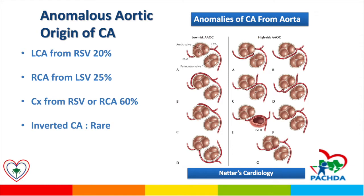Anomalous aortic origin of coronary arteries has been reported as one of the important classifications. We have two categories: low risk aortic anomalous and high risk aortic anomalous of the coronary artery. One example is the left coronary artery from the right sinus of Valsalva in about 20%. Another subcategory is the right coronary artery from the left sinus in about 25%, and the majority of cases are due to a circumflex from the right sinus of Valsalva. There is also a rare abnormality of inverted coronary arteries.